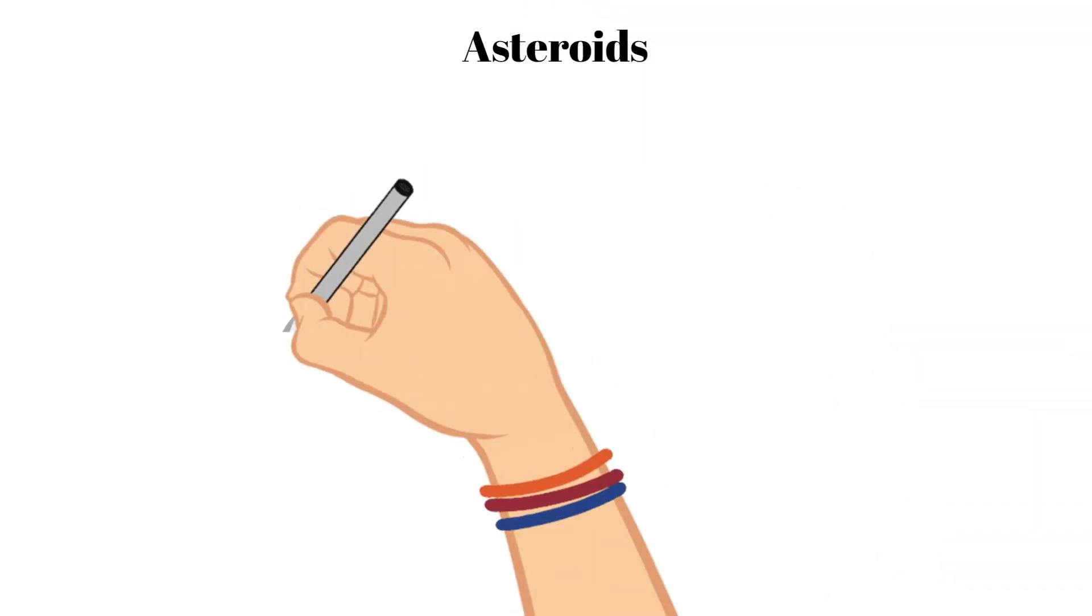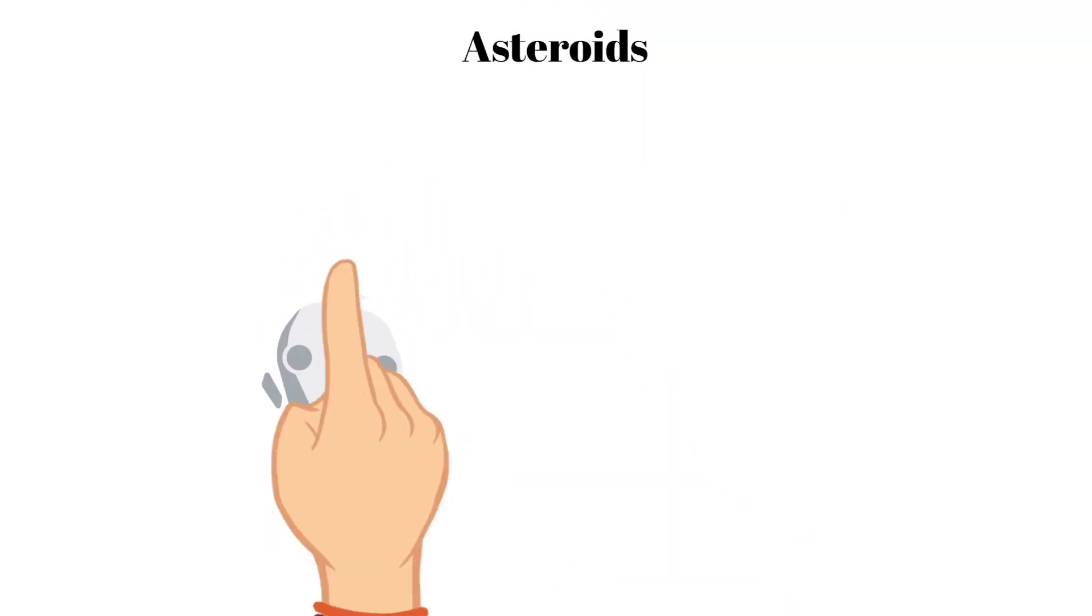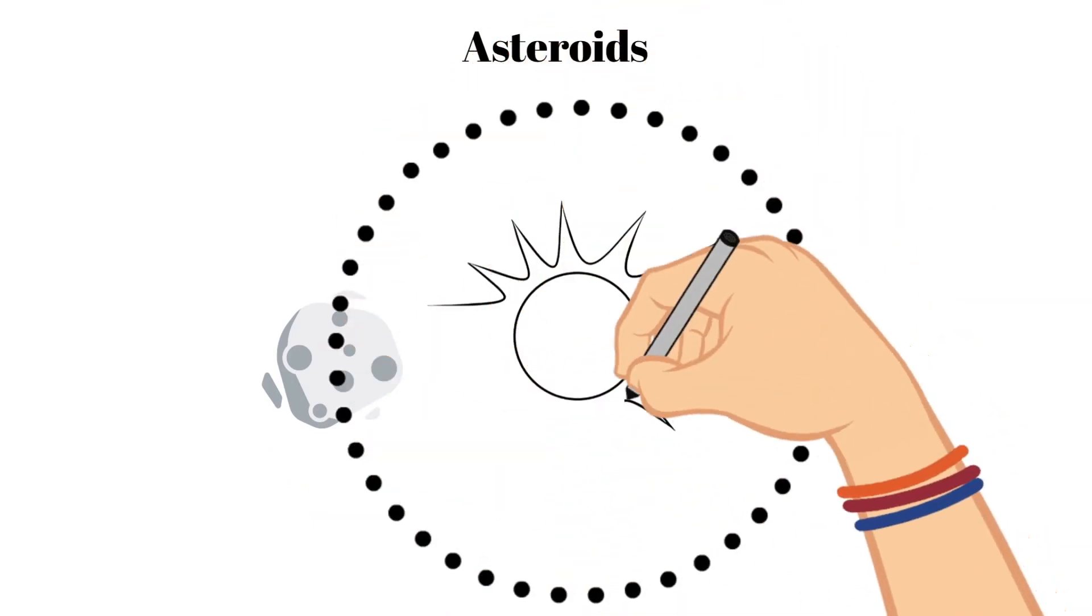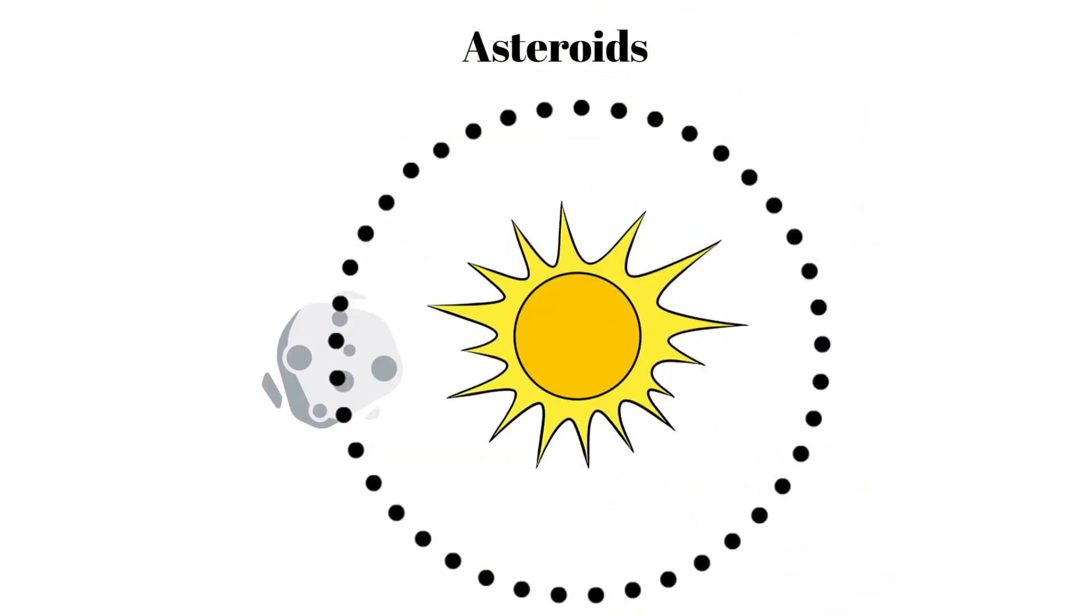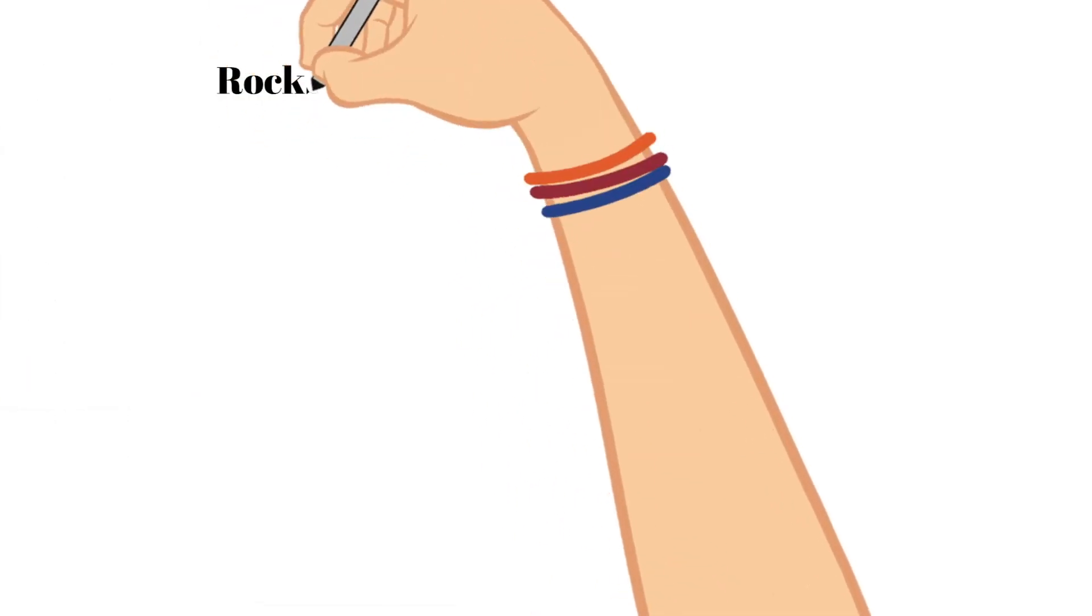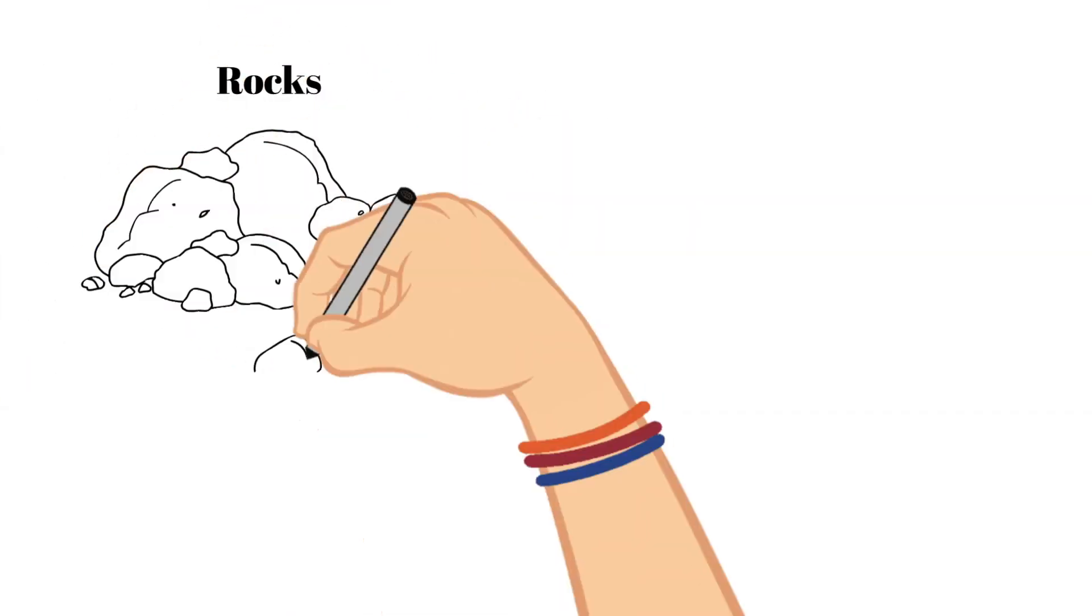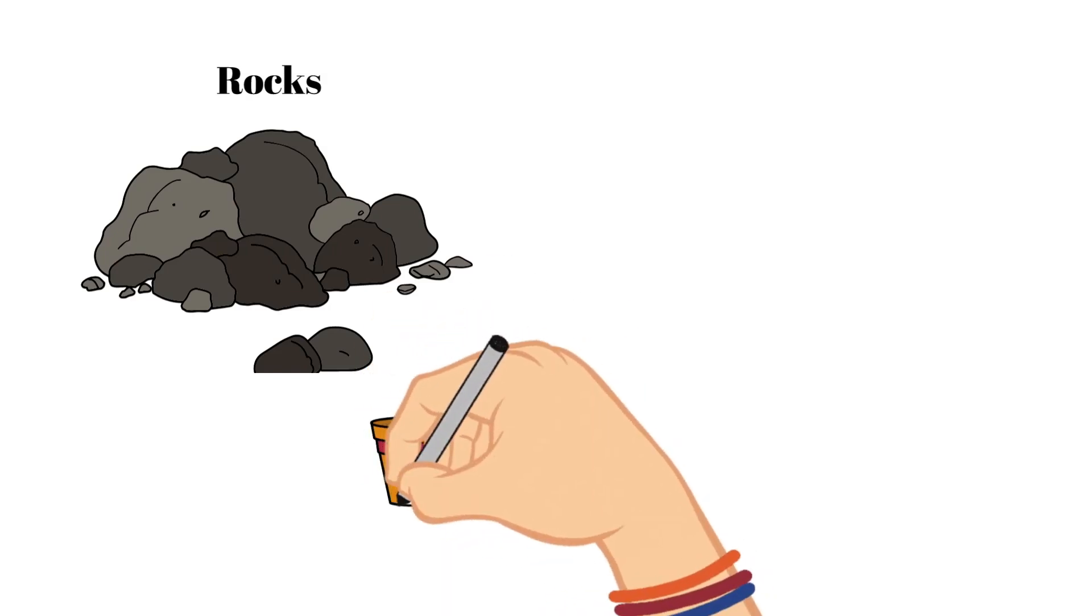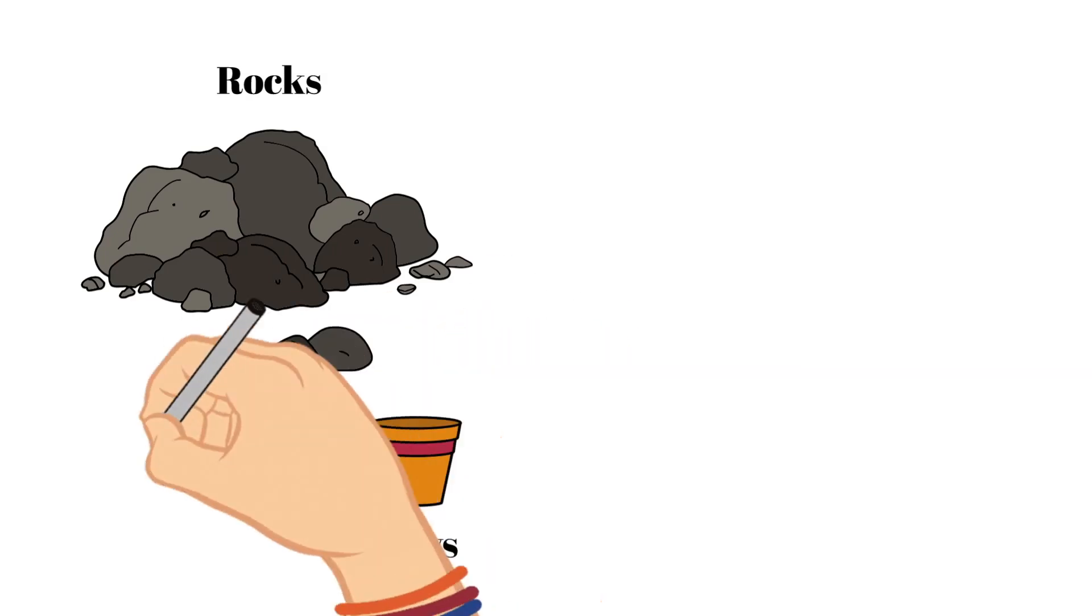Let's start by discussing asteroids. Asteroids are small rocky objects that orbit the sun like planets do. Most are made up of different types of rocks, but can also have clays and different metals in them as well.